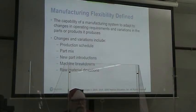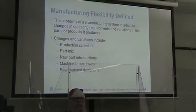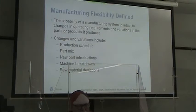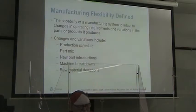The definition of manufacturing flexibility is the capability of a manufacturing system to adapt to changes in operating requirements and variations in the parts or products it produces. Those changes and variations can include the production mix, production schedule, the part mix, new part introductions, machine breakdowns, and raw material deviations.